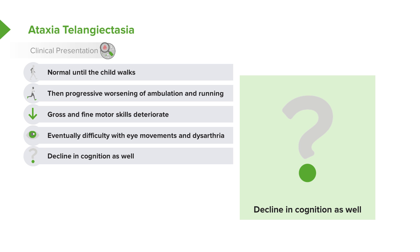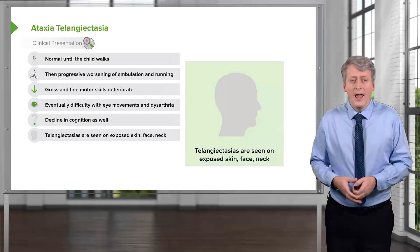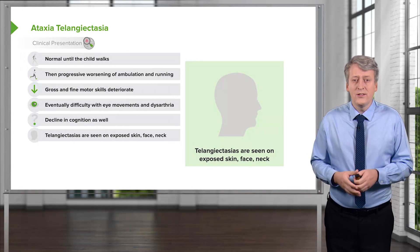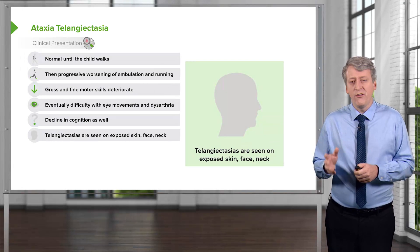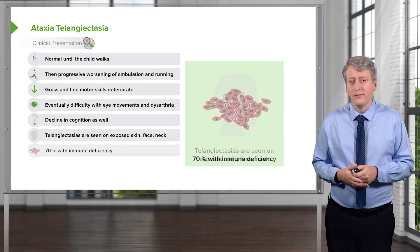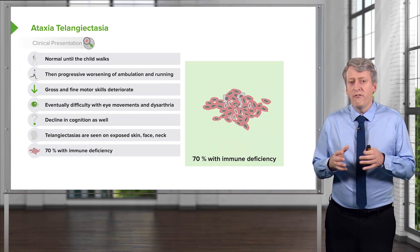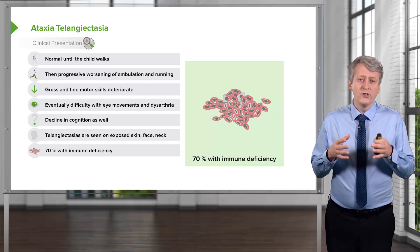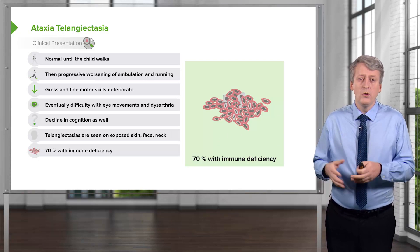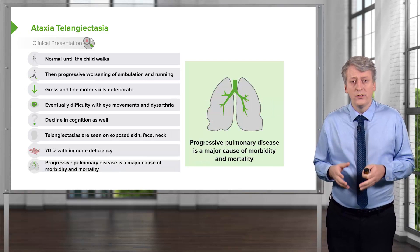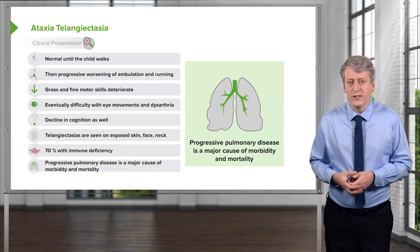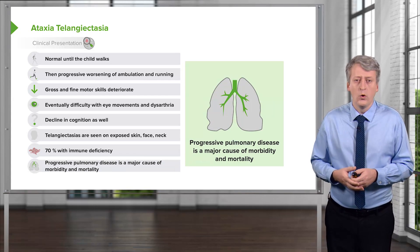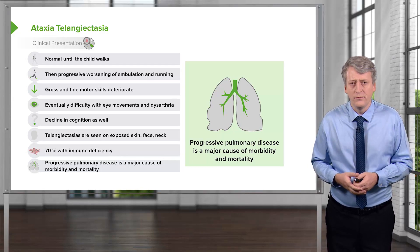These children will unfortunately also have a decline in cognition. On examination, we can see telangiectasias on their skin, face, and neck. About 70% of these children will have an associated immune deficiency and, as a result, often have progressive pulmonary disease, which is a major cause of morbidity and mortality in this condition.